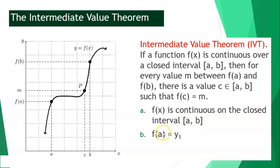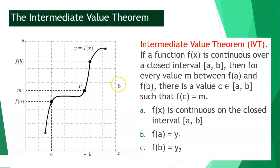f of a is equivalent to y sub 1, which is the first endpoint, while f of b is equal to y sub 2, which is the second endpoint of the interval.